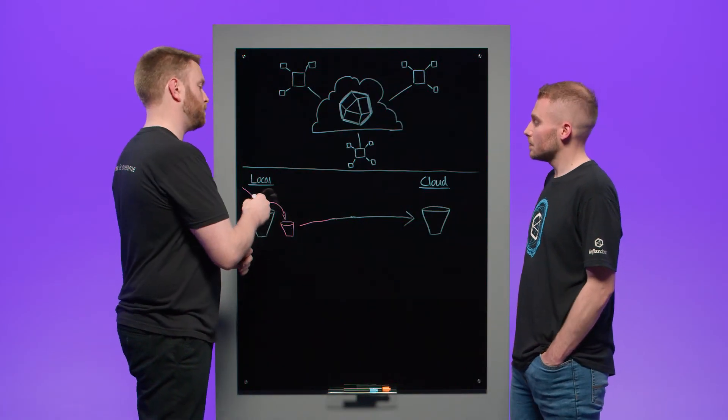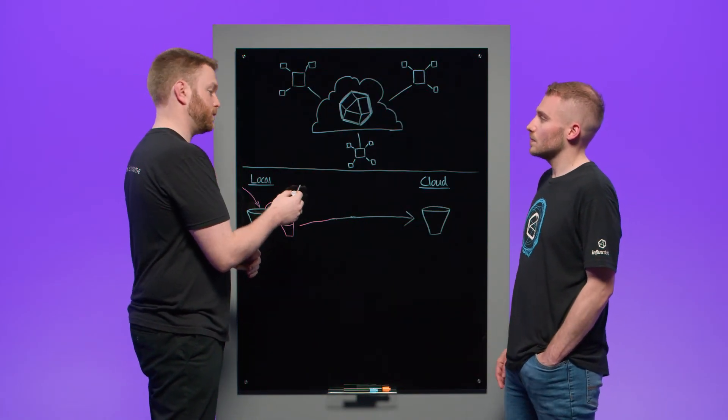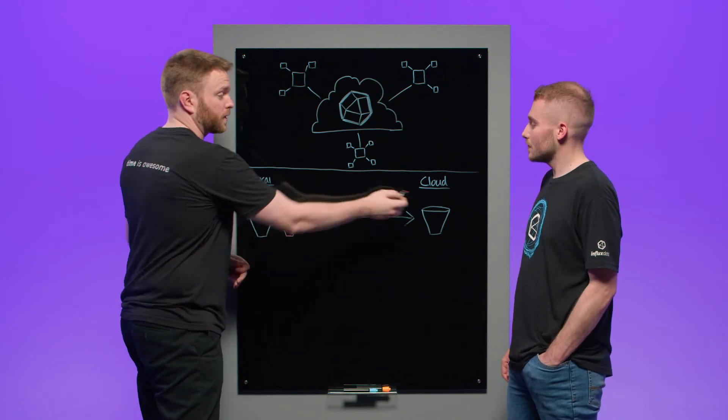All right then, so I'm going to throw you a curveball question. So I know for a fact that the two function exists. And the two function allows me to send my data from a local instance to a remote instance like InfluxDB Cloud. So what's the difference between what you're doing and what I'm doing? Perfectly reasonable question.